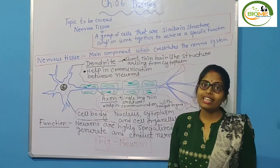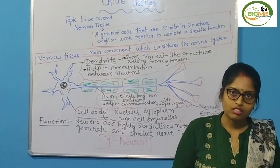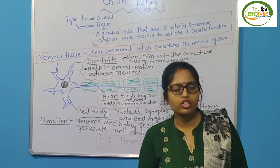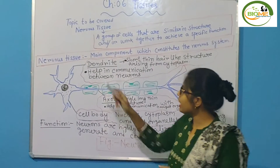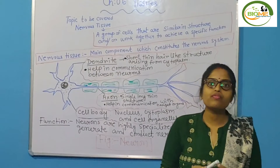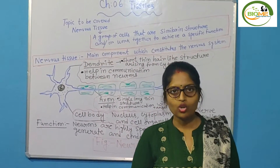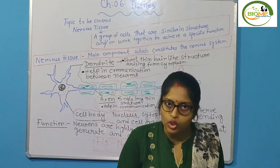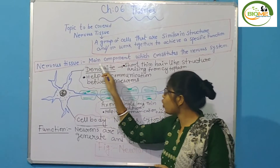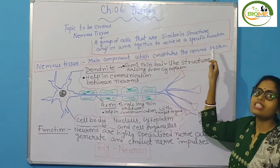First, what is tissue? Tissue is a group of cells that come together and perform a specific function. Now the question is: where is nervous tissue, nerves, found? Obviously it is found in your brain and spinal cord. So from that we can conclude nervous tissue is the main component that constitutes the nervous system.